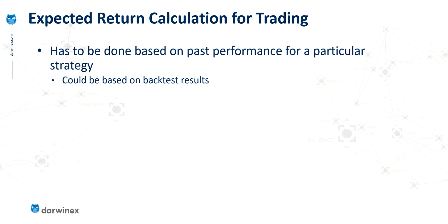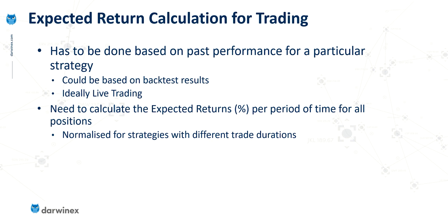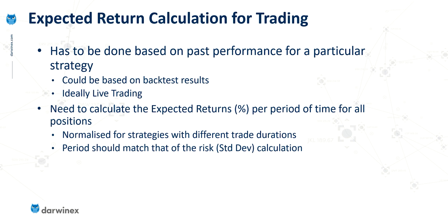This could be based on a number of methods. The first is by looking at backtest results. If this is a brand new strategy, you'll have nothing else other than backtest results. But what's better, if you do have some track record, is to base it on your live trading results. From one or the other, you need to calculate what the expected return percentage is per period of time for all of those positions. The reason it needs to be for a set consistent period of time is so that we are effectively normalizing it for strategies that have different trade durations. The period should match the period that's being used to calculate the risk or the standard deviation.